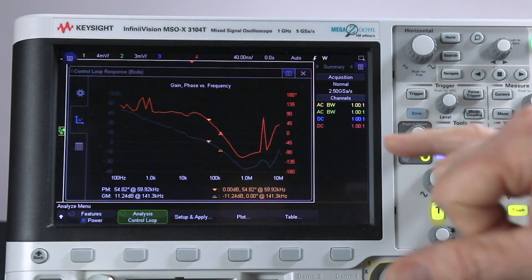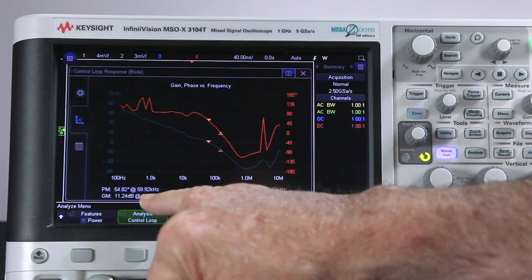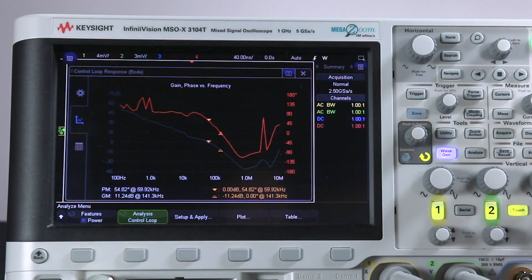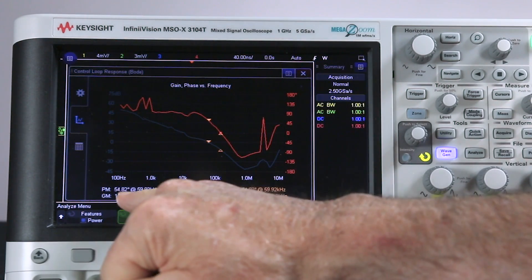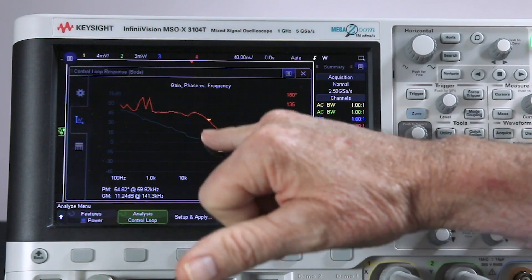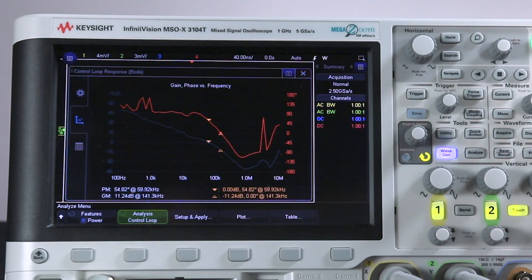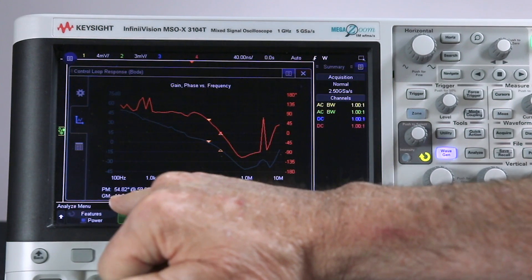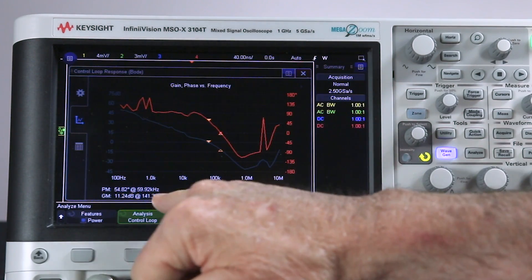So there's our first test. Now, I'd like to point out a couple of things. First of all, it immediately shows you PM, which stands for phase margin, 54.82 degrees at approximately 60 kilohertz. That's this point that it's marking right here. And it also measures gain margin at approximately 141 kilohertz.